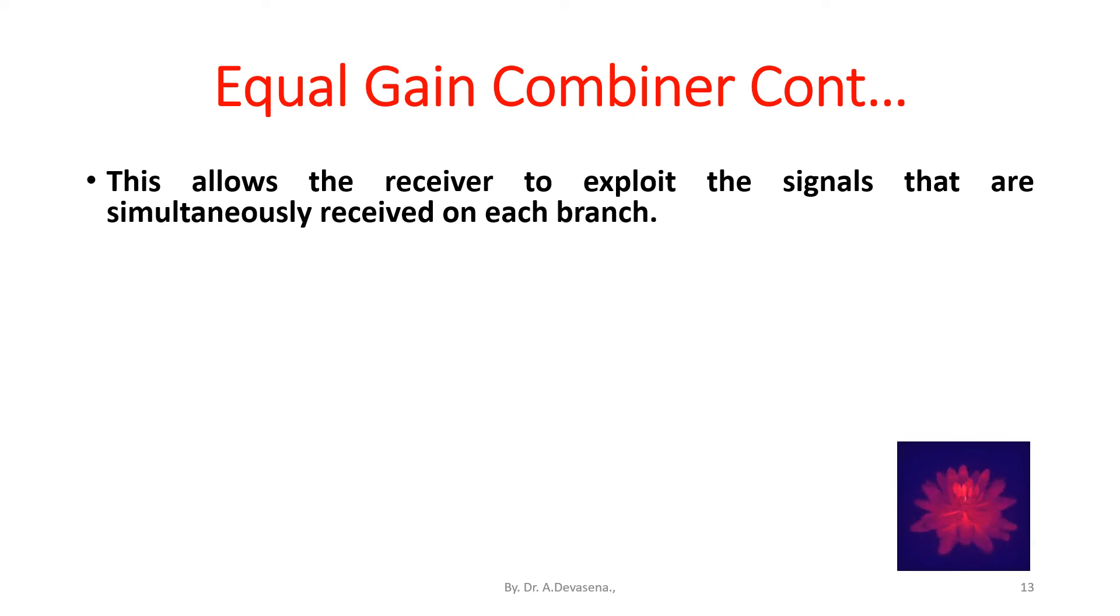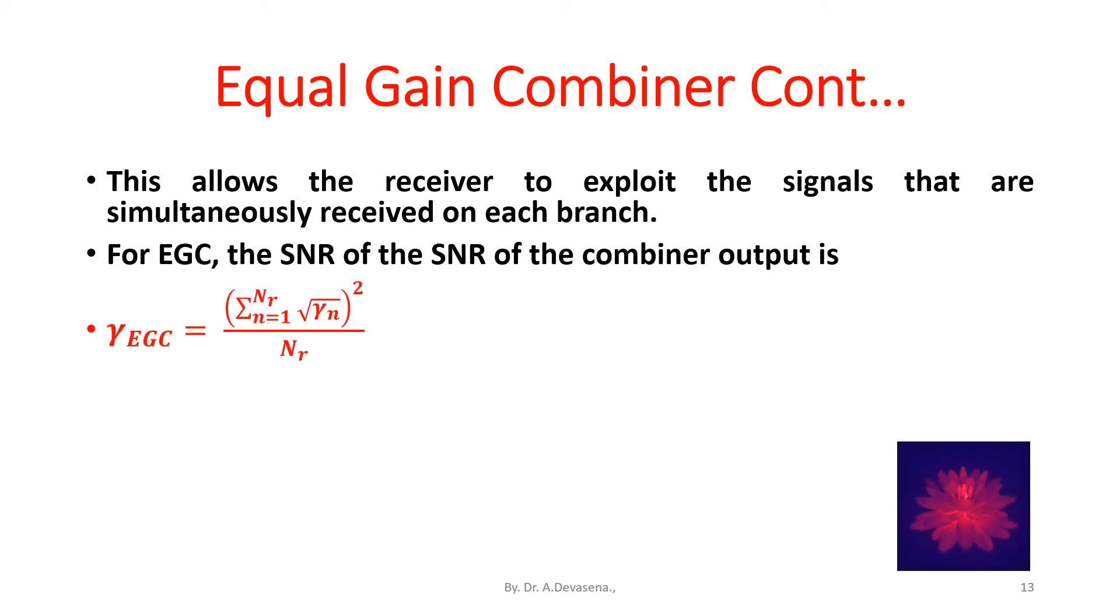For EGC, the SNR of the combiner output is gamma_EGC is equal to open bracket summation n equals 1 to N_R square root of gamma_n close bracket the power square divided by N_R.